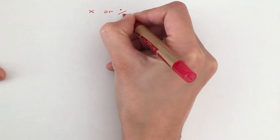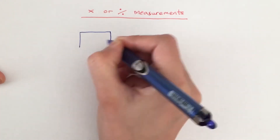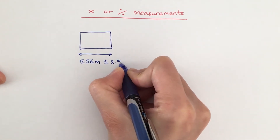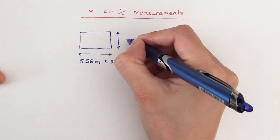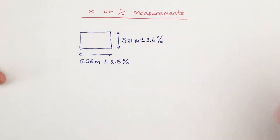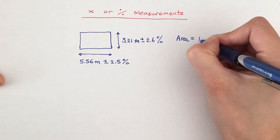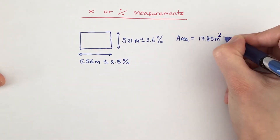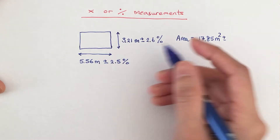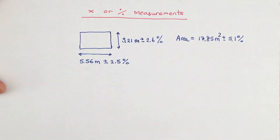In this next example, I'm going to show you what you need to do when you multiply or divide measurements. We have two dimensions: the width is 5.56 meters with a percentage uncertainty of 2.5%, and the height is 3.21 meters with a percentage uncertainty of 2.6%. To find the area of this rectangle, multiply 5.56 by 3.21 to get 17.85 meters squared. This time, instead of adding absolute uncertainties, we add their percentage uncertainties. If the question only gives absolute uncertainties, convert them into percentage uncertainties first.